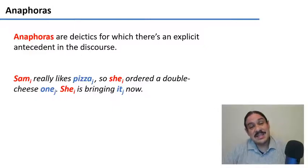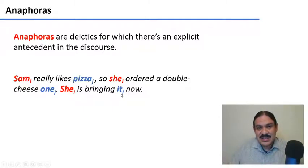She really likes pizza, so she ordered a double cheese one. She's bringing it now. So there's pronouns like one and it that are co-referencing the word pizza in the preceding discourse.